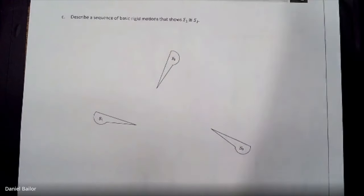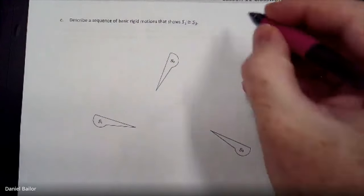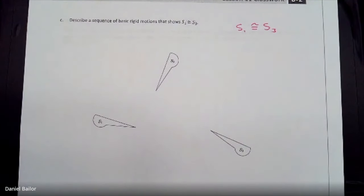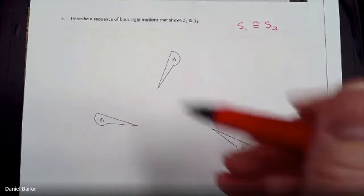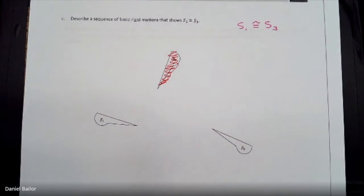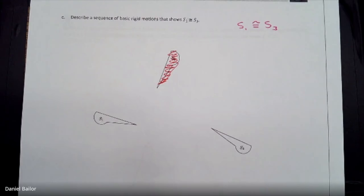We've got one more exercise on page 117. This time they're asking you to prove that S1 is congruent with S3, so we do not need S2. Pause the video, see if you can prove it — can you move S1 on top of S3? What rigid motions do you need? Pause and try, then come back when you're done and see if your answer matches mine.